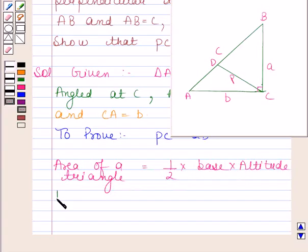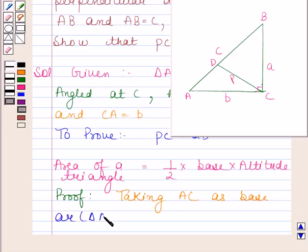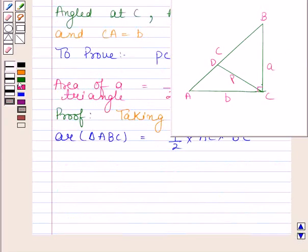Let us now begin with the proof. Taking AC as base, we get area of triangle ABC as half into AC, that is base, multiplied by BC, which is altitude. Now AC is equal to B and BC is equal to A, so this is equal to half into BA. Let us name this as equation number 1.